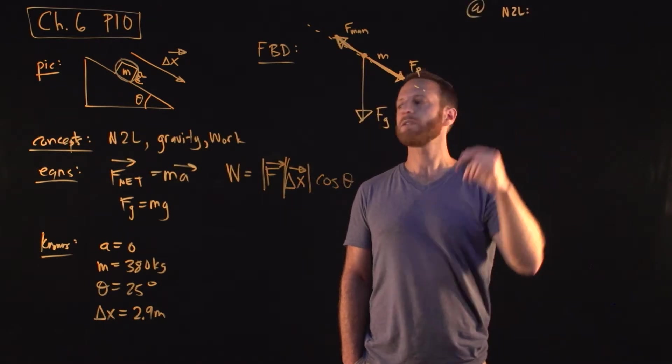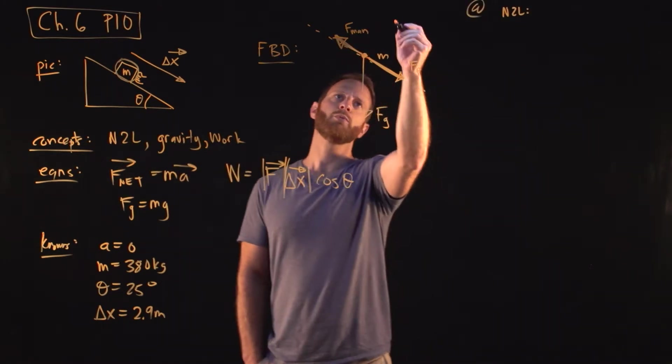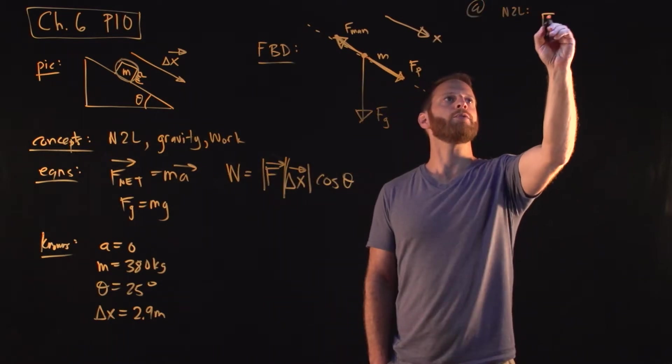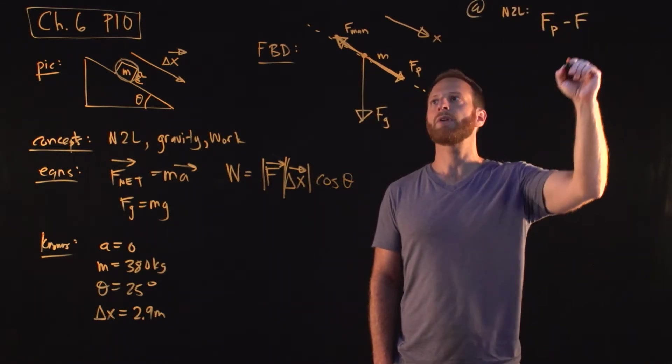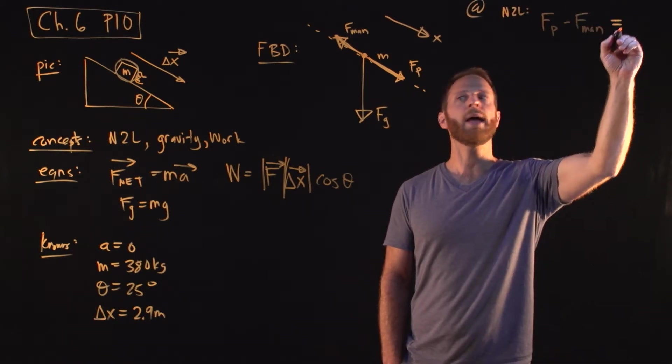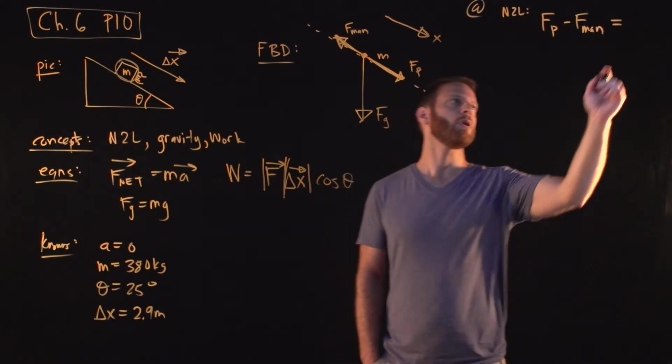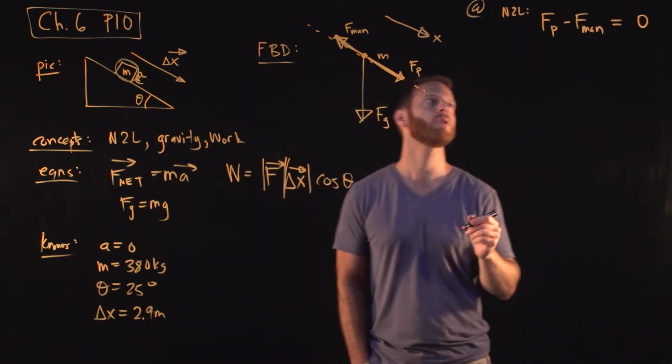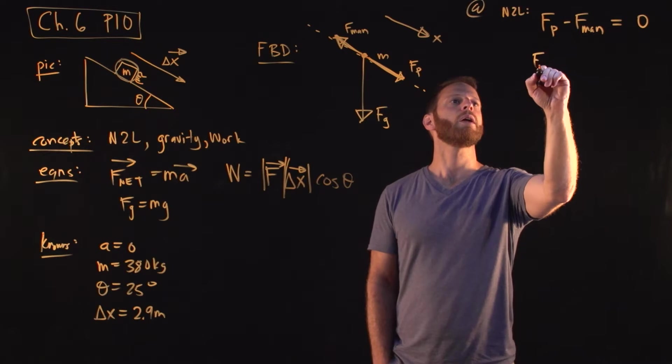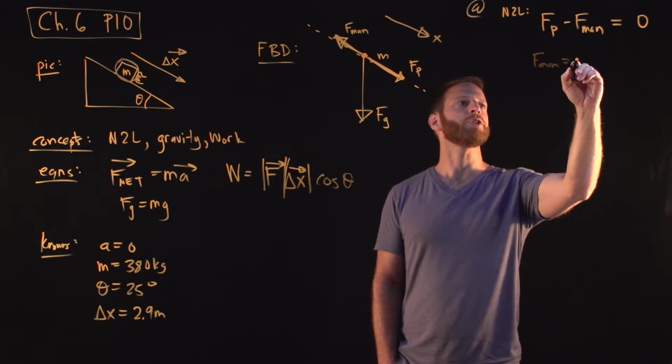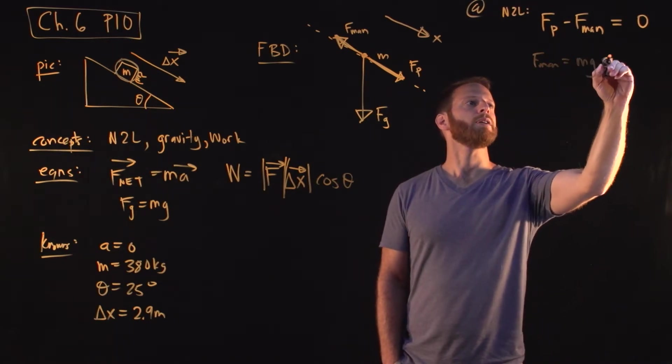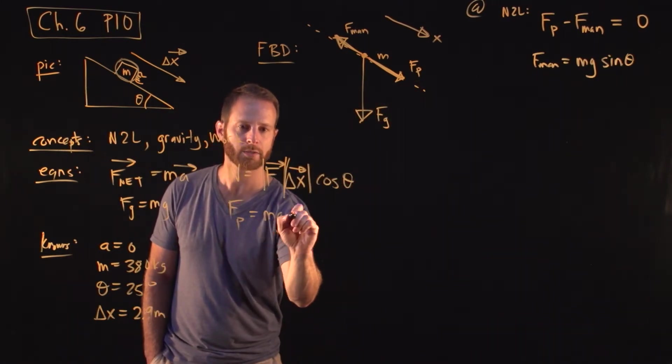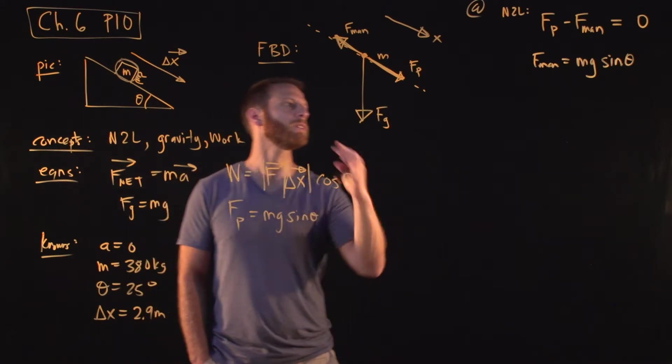So Newton's second law says that the net force in this direction - why don't I go ahead and label this x - is the force, the parallel component of gravity, minus the force that the guy, the man, is applying. That's equal to ma, but remember the acceleration is zero, so that tells us that the force that the man applies is equal to the parallel force of gravity. In other words, Fman is just mg sin theta, one of those equations that I forgot to write down, but perhaps you have memorized by now. That's the force that he applies.